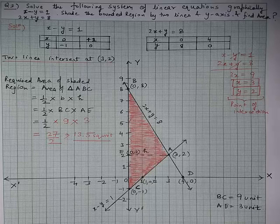Now we will do a graphical question based on the system of linear equations in two variables. Question 3: solve the following system of linear equations graphically — x − y = 1 and 2x + y = 8. We have to represent these equations on a graph paper and find the area of the bounded region. The bounded region means the closed region formed by the two lines and the y-axis.